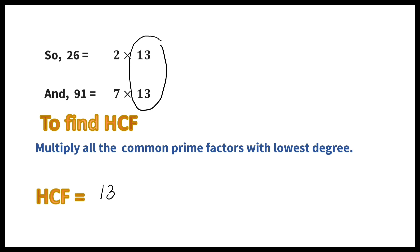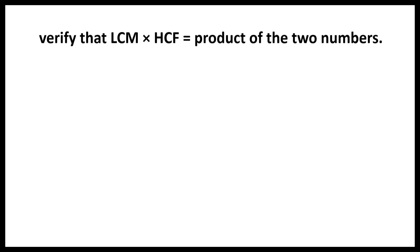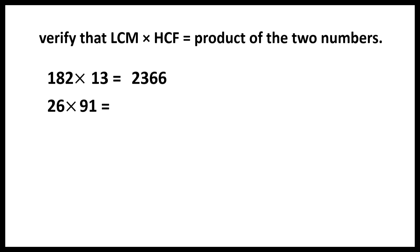Now we have to verify that LCM into HCF is equal to the product of the two numbers. LCM is 182 and HCF is 13. 182 into 13 is equal to 2366. The numbers are 26 and 91, and 26 into 91 is also equal to 2366. So LCM into HCF is equal to the product of the two numbers.